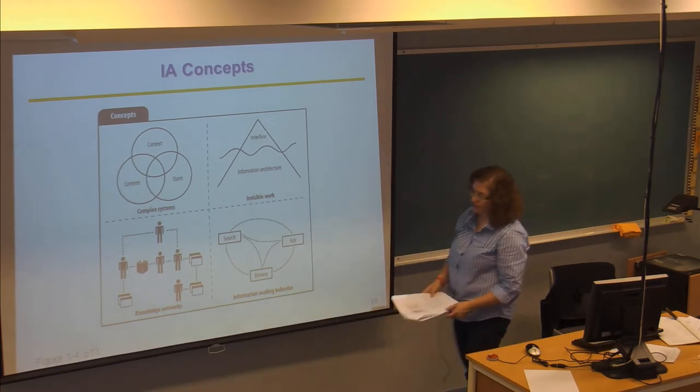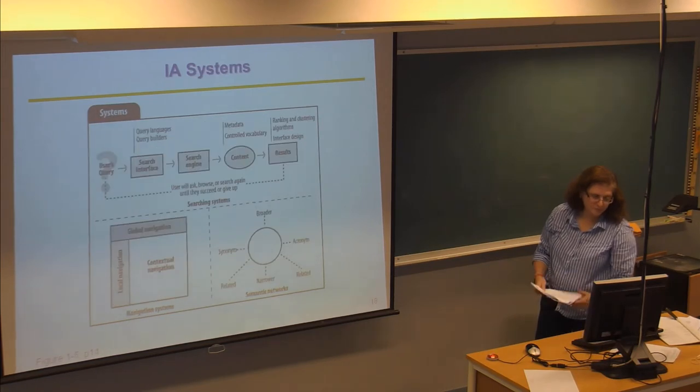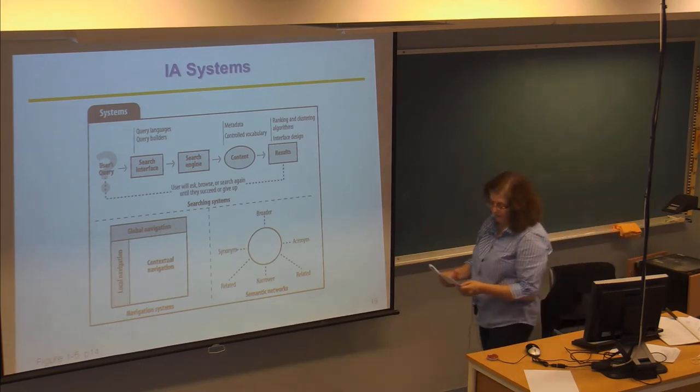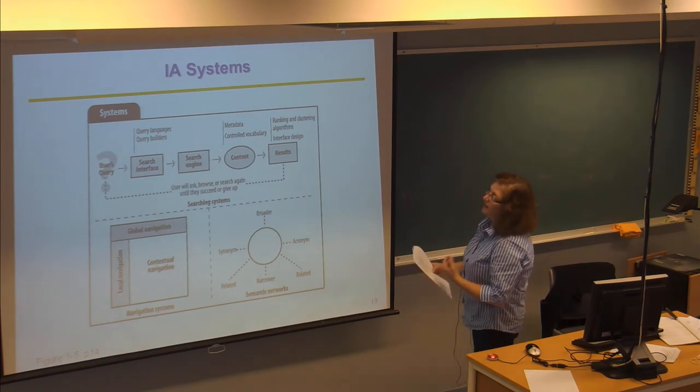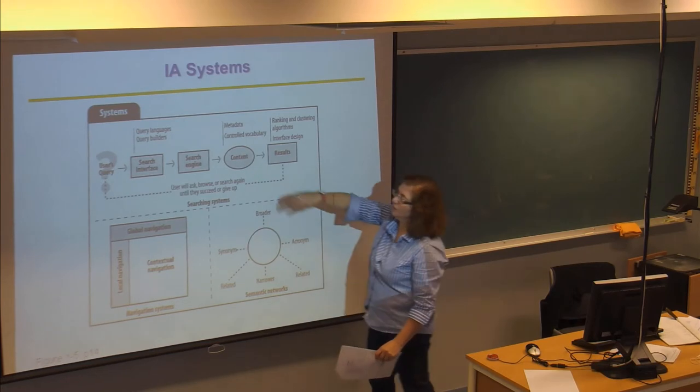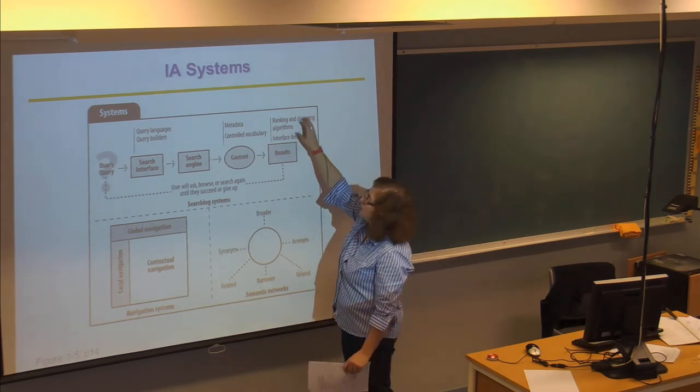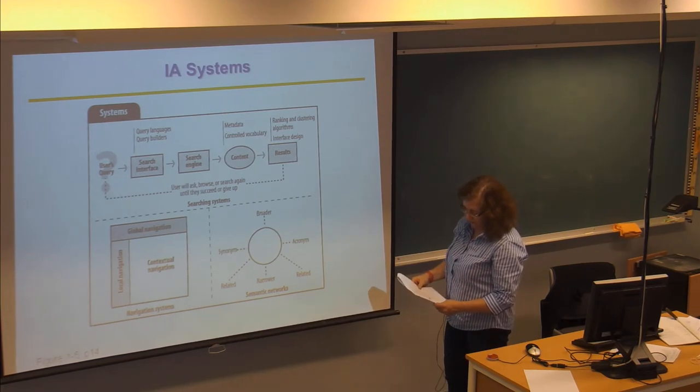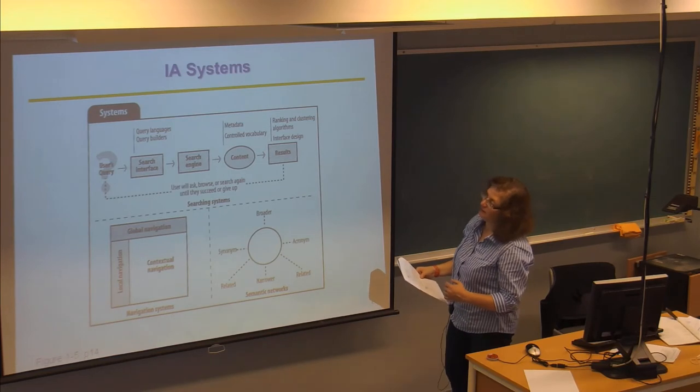How you search for information and how you get the answers is different. And so one of the chapters will go through this information-seeking behavior. The IA systems, they usually are made up of different types of interfaces and search engines. And they will also involve information about the information. So, metadata is information about the content of what you're searching for. Characteristics of the content. And depending on the algorithm, you get different types of ranking and clustering or grouping of these search results.